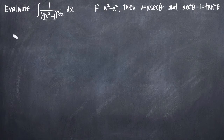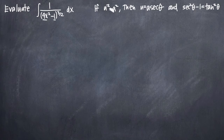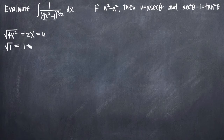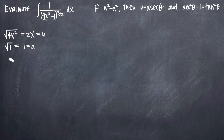Our next step is to set up our trigonometric substitution. Given that we have the form u² - a², we want to identify u and a. The square root of 4x² gives us 2x, so u equals 2x. The square root of 1 gives us 1, so a equals 1. Once we have u and a, we plug them into our identity: u equals a secant of theta. So we get 2x equals 1 times secant theta, or just secant theta.